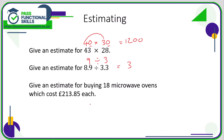For this final example, give an estimate for buying 18 microwave ovens which cost £213.85 each. Well, let's call this 20. And you could round the price to the nearest 10, which would be 210, and that would be absolutely acceptable. But with estimating, in the exams they normally give you a range that you can fall within, so there's not only one correct answer. You might want to just round this down to 200 pounds.